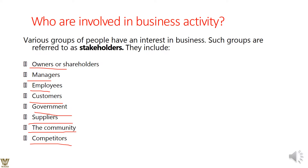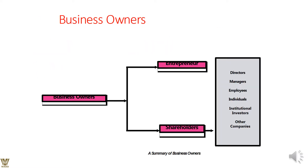To summarize, the stakeholders we are talking about are: owners, managers, employees, customers, government, suppliers, community, and competitors. The business owner category includes directors, managers, employees in their individual capacity, and investors.